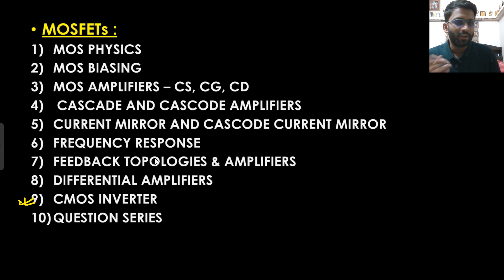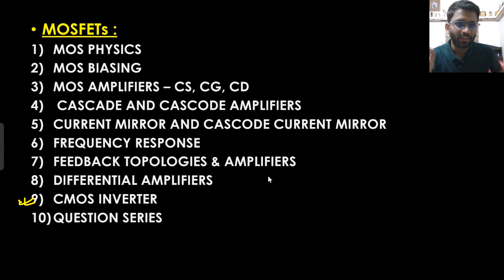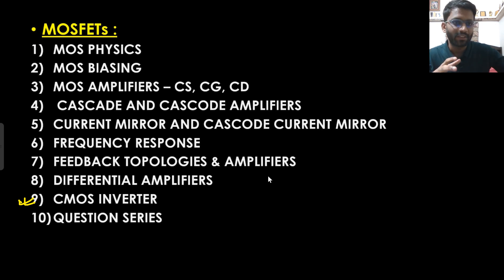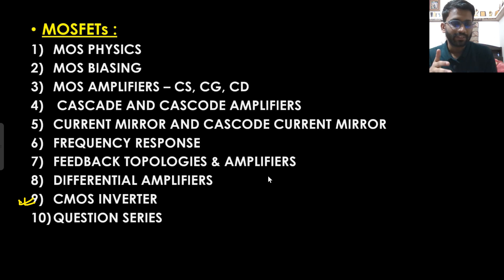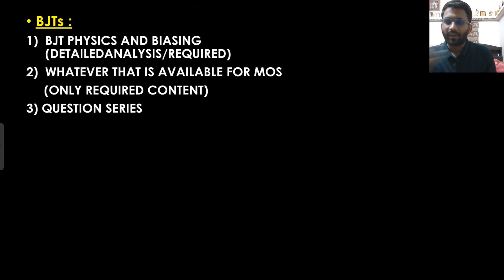Once you are comfortable with MOS amplifier, BJT will be a cakewalk. We will cover common emitter, common base, and common collector configurations for BJT, but not in great depth. For MOSFET I estimate around 30 to 35 hours of content. You will not just solve every question — you will know what they are actually trying to ask and will be able to frame questions yourself. Those who have studied from me in paid placement courses can confirm this in the comments.